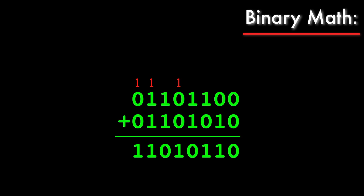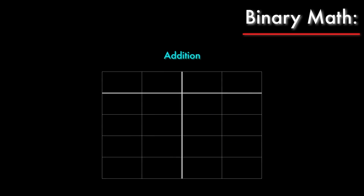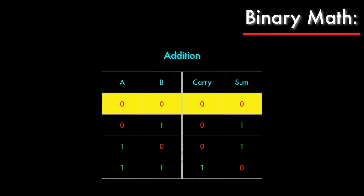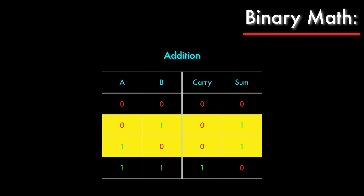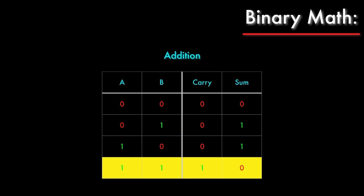So how do logic gates help us here? Let's write a truth table of our addition operation for 1 column. We'll call the numbers we're adding A and B, and the outputs will be the potential carry value and the sum that we write below. Adding 2 zeros yields a sum of 0 and we don't have to carry anything. Adding 0 and 1, or 1 and 0, yields a sum of 1 and we don't have to carry. Adding 2 1s gives us 1 0 — we have to carry the 1 and we get a sum of 0.